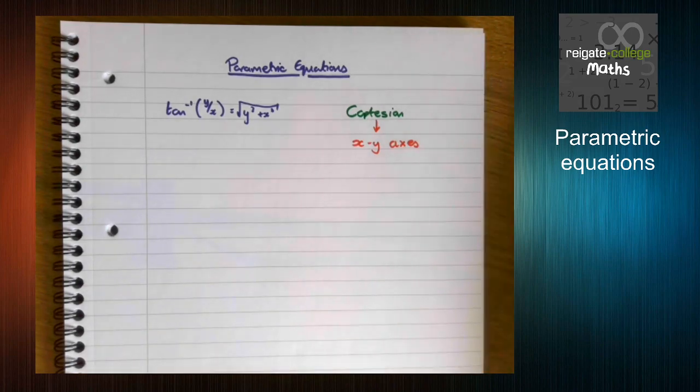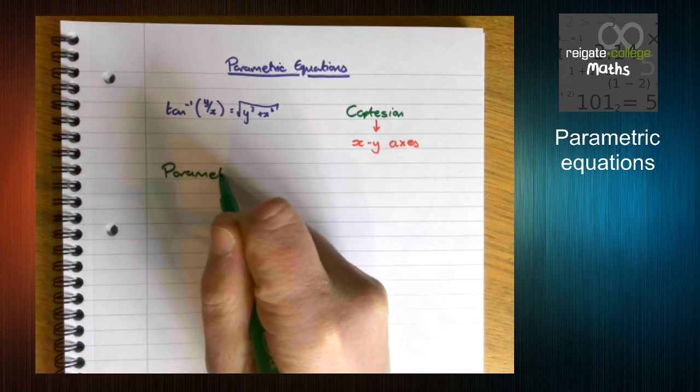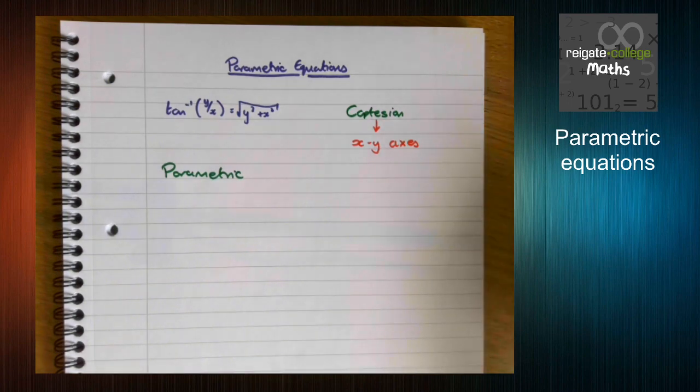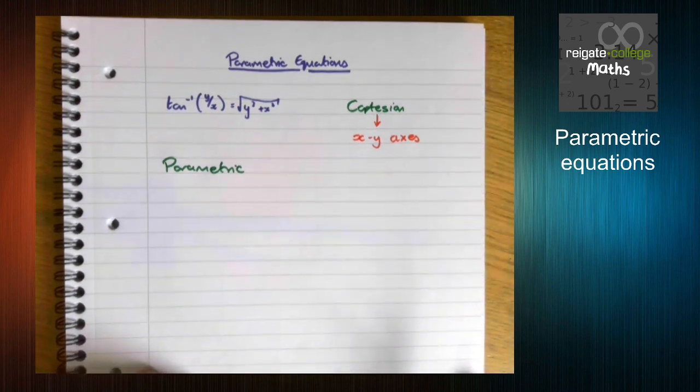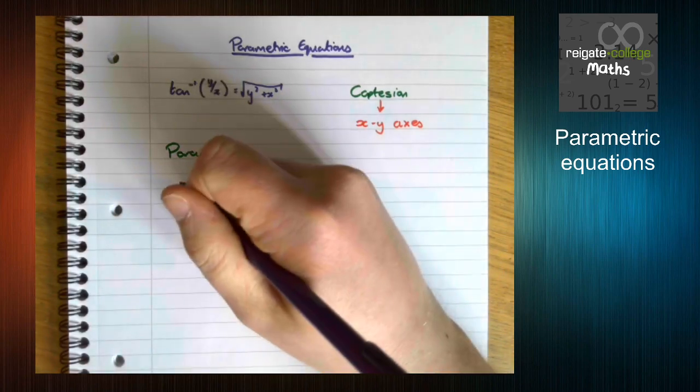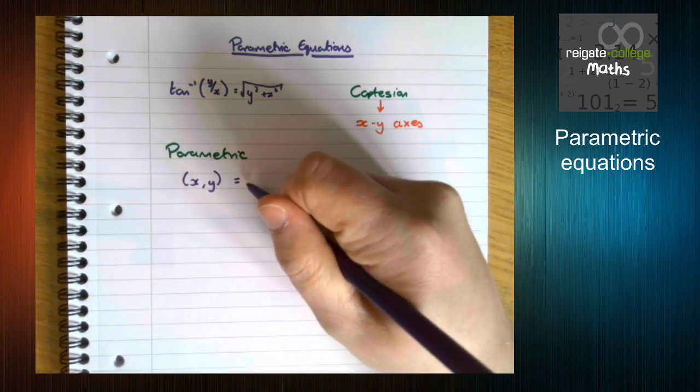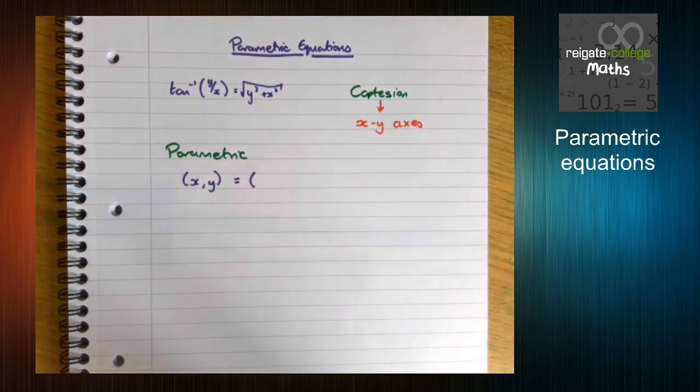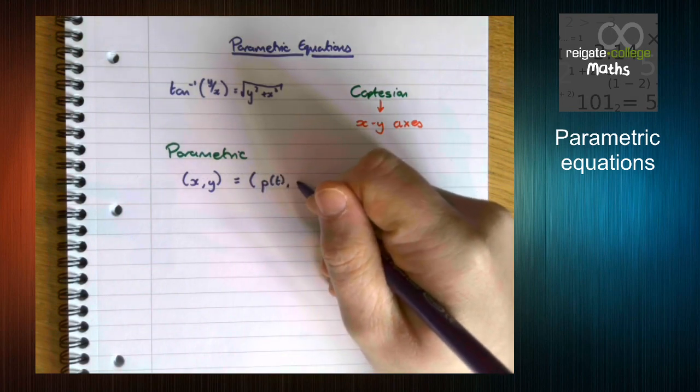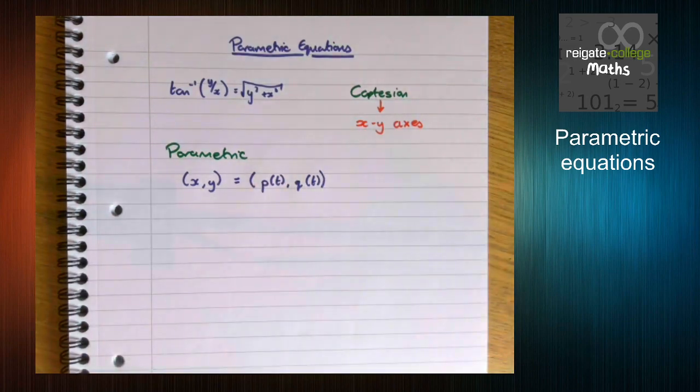However, a parametric equation is a different way to look at it. So what this does is this says for any coordinate x, y on a graph, we are going to write that in a different way. We're going to write it as some function of t and another function of t.